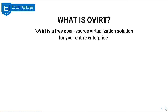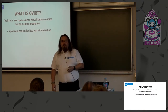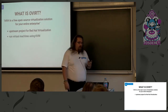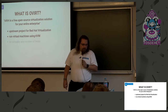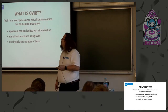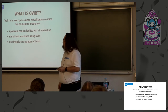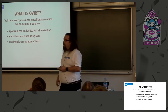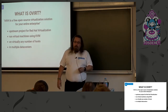First question: what is oVirt? According to overt.org, oVirt is a free, open-source virtualization solution for your entire enterprise. It's the upstream project for Red Hat virtualization — everything I tell you about oVirt is also true for Red Hat virtualization. It basically runs virtual machines using KVM on virtually any number of hosts, so if you have a data center with a lot of machines, you can use oVirt to manage them, basically like vSphere.